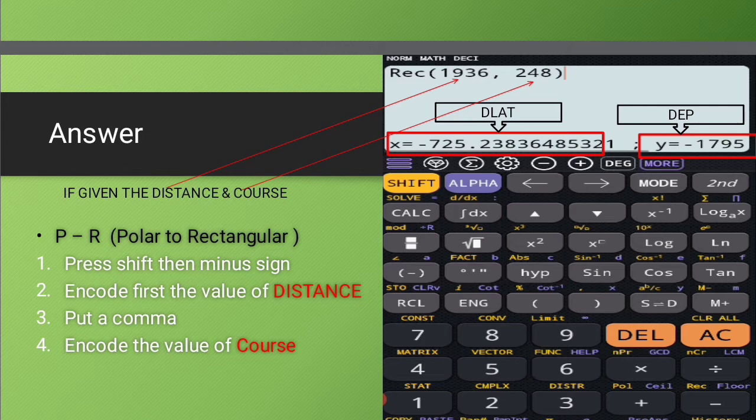So again, please disregard the negative sign and please also take note that the unit will be in nautical miles. So if you wanted to get the value of difference of latitude in degrees, then you should divide the answer into 60.